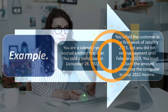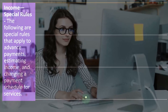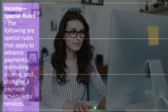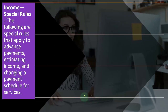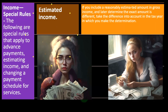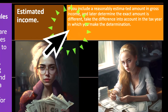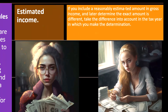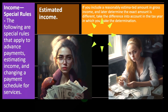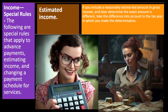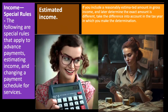Whereas if you did bookkeeping, you completed the job when you finished the bookkeeping. Income special rules: the following are special rules that apply to advanced payments, estimating income, and changing payment schedules for services. Estimated income: if you include a reasonable estimated amount in gross income and later determine the exact amount is different, take the difference into account in the tax year in which you make the determination. So if you estimated income in 2022 and in the following year the actual amount was different, you don't go back and file an amended return — you make the adjustment in the current year.